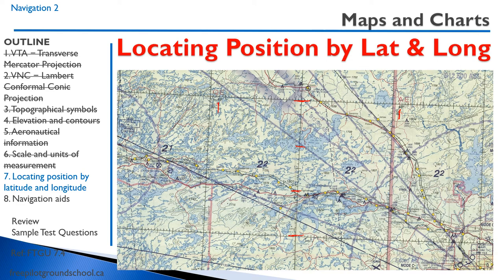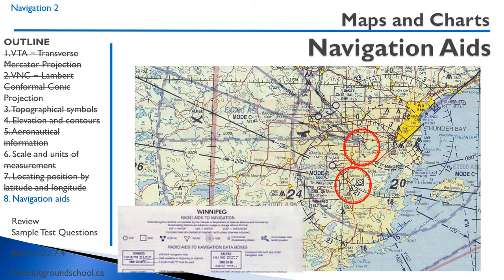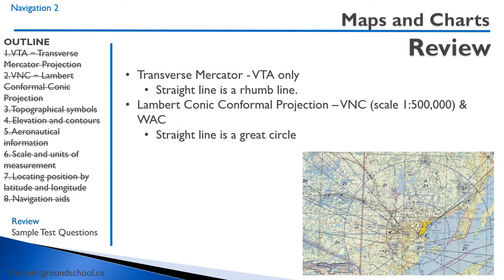An exam question might ask: what is located at 48°39'N, 90°37'W? You count up 37 minutes along the longitude and 39 minutes along the latitude — and you'd find it's a tower. The answer choices would be something like a tower or other feature. Navigation aids shown on the map include the VOR/TAC (shown at the bottom of the symbol) and the NDB — Non-Directional Beacon — shown at the top. Your legend will explain everything you need to know.